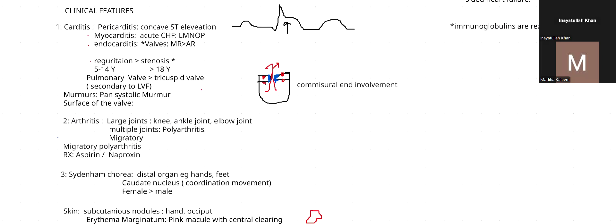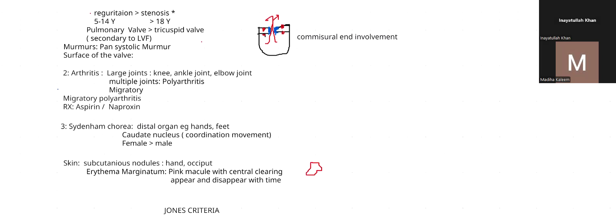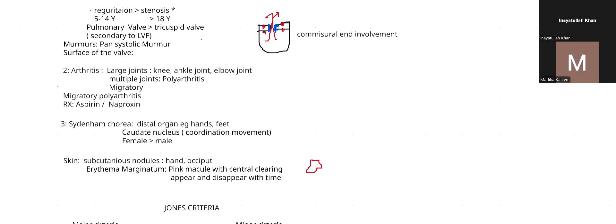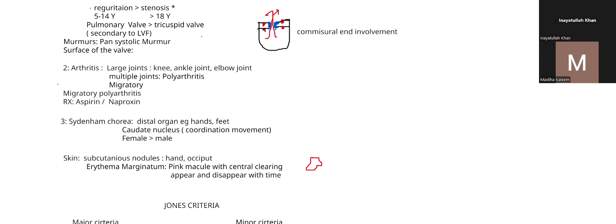The arthritis component of rheumatic fever involves immune complexes affecting large joints — the knee, ankle, and elbow — with multiple joints involved, hence polyarthritis. The nature of this arthritis is migratory, moving from one joint to another. Treatment is mainly aspirin; if the patient has stomach irritability, naproxen is used instead.